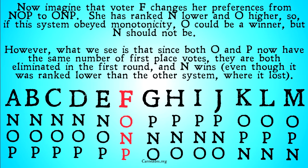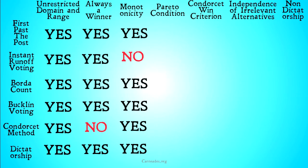Even though N was ranked lower by a particular voter in this system than in the other set of voter preferences where it lost, by being ranked lower it actually improved its chances. So a smart voter for N should rank O higher than N in order to get N to win. Because this happens, instant runoff voting does not obey monotonicity.